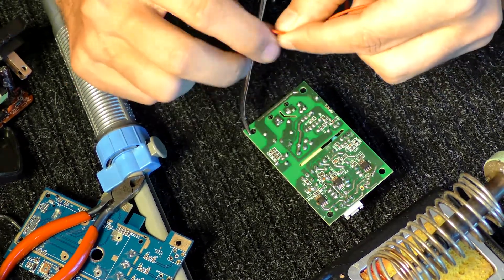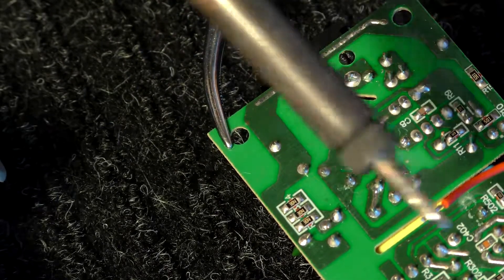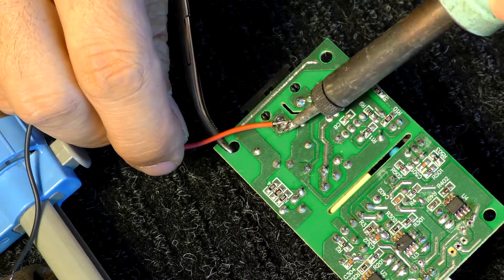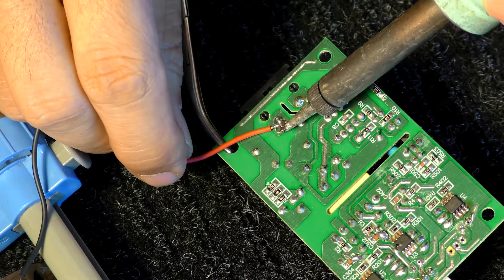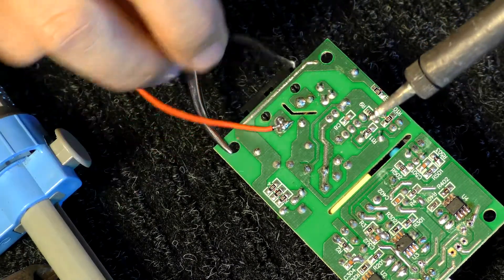Again we twist the wires and pre-coat them with solder to get them ready. Then we take the wire, hold it in place, let the solder melt together. Hold it for a few seconds. You're going to see it turn solid.